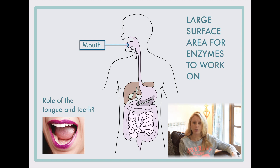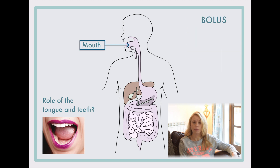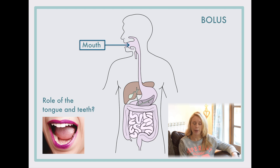The tongue, which is a muscle, rolls the food into a ball known as a bolus, and this helps us to swallow it easily down the esophagus and into the stomach.